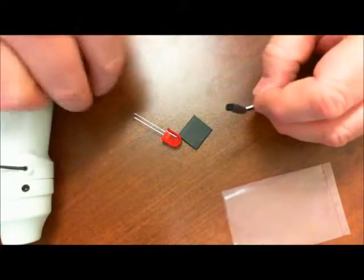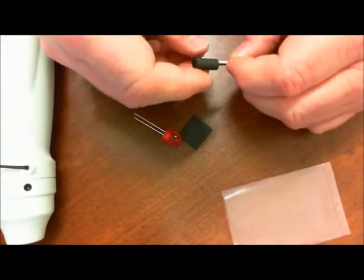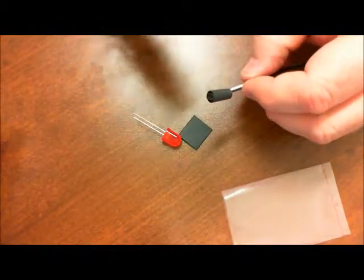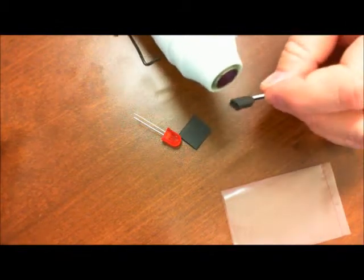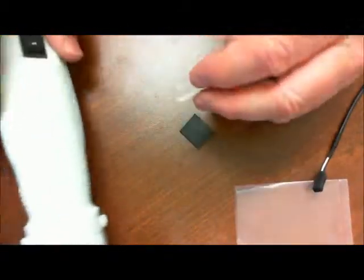And then to make it a little bulkier, we put another piece of heat shrink tubing over that and shrink it down. Okay, now we're ready to add our LED to this.